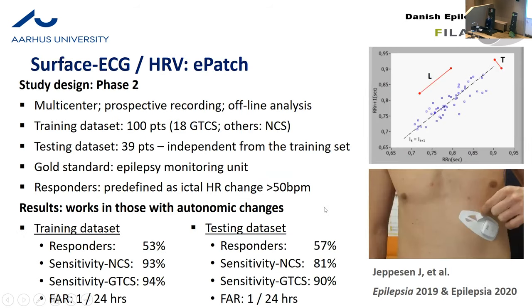We used the square of the L component — what is specific for the seizure — creating a modified cardiac sympathetic index. This red bar marks the seizure, and you can see the increase is really pronounced at the start of the seizure, while during exercise the modified cardiac sympathetic index doesn't come close. We validated this in phase two studies. It works only on patients who have a marked change in heart rate — marked autonomic changes during a seizure — which is however more than half of the population. Within these responders, sensitivity is 81% for non-convulsive seizures and 90% for generalized tonic-clonic seizures, with a false alarm rate of one per day.